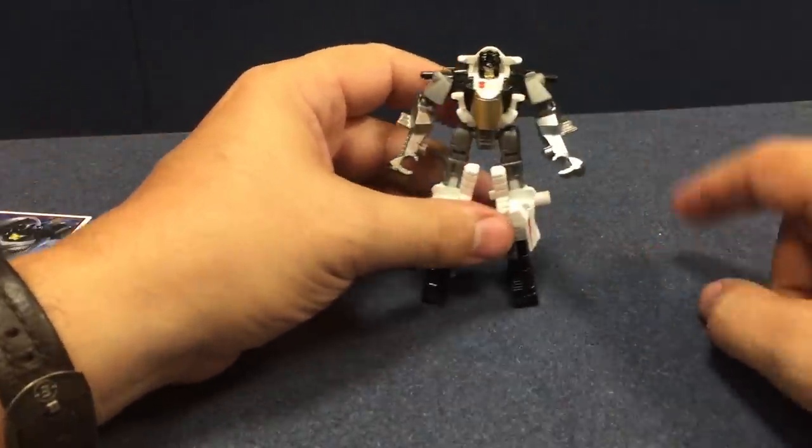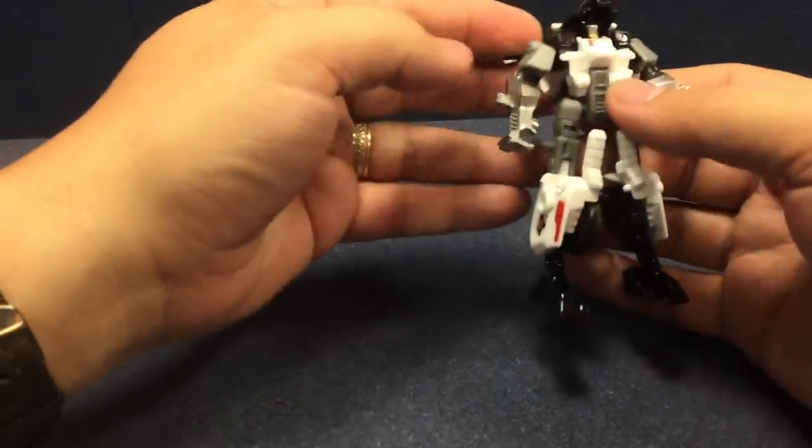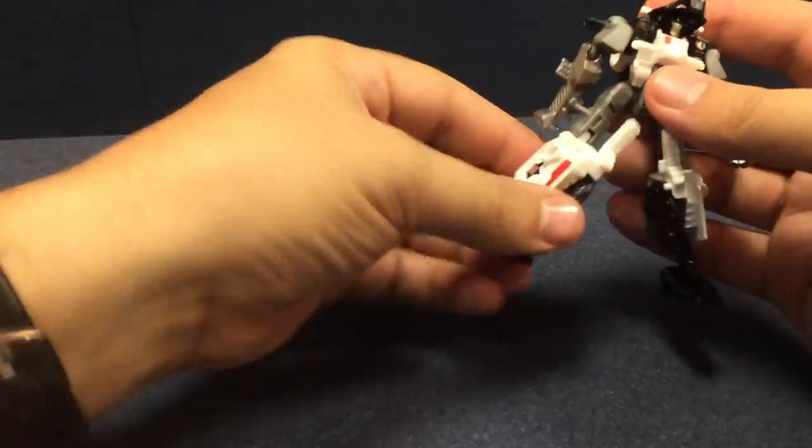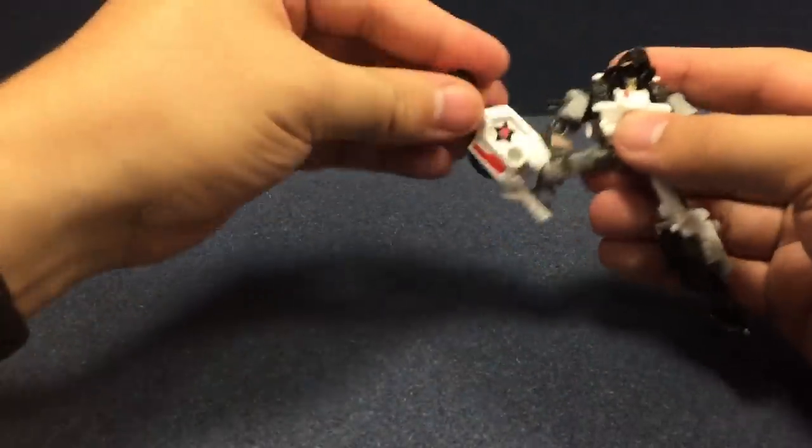He's got a little Autobot logo right up there. And like I said, he does also form a chest plate for Defensor. And it's basically just kind of... we'll show it off in the combined mode, but it's basically just kind of folding them up.